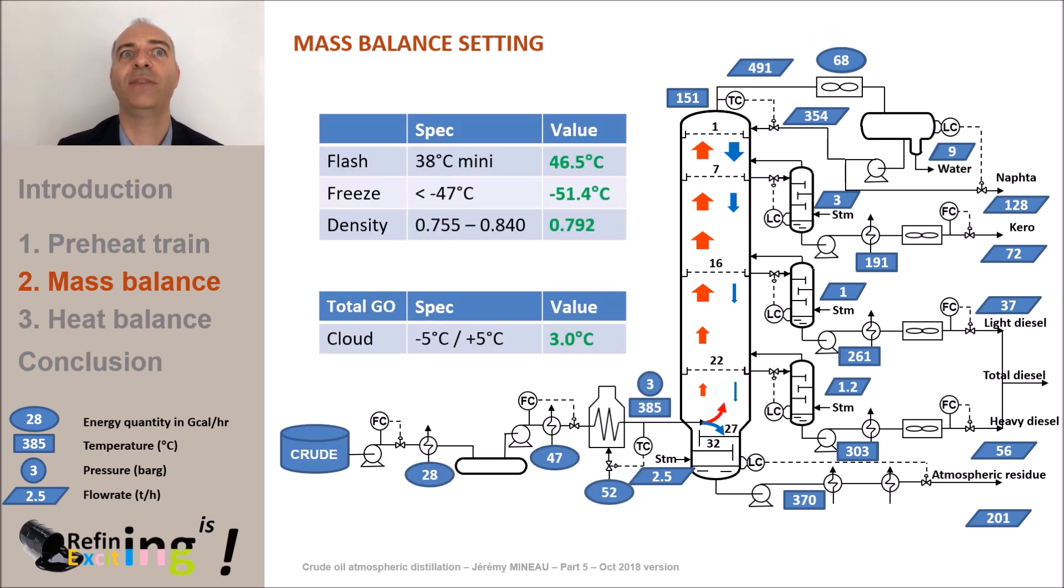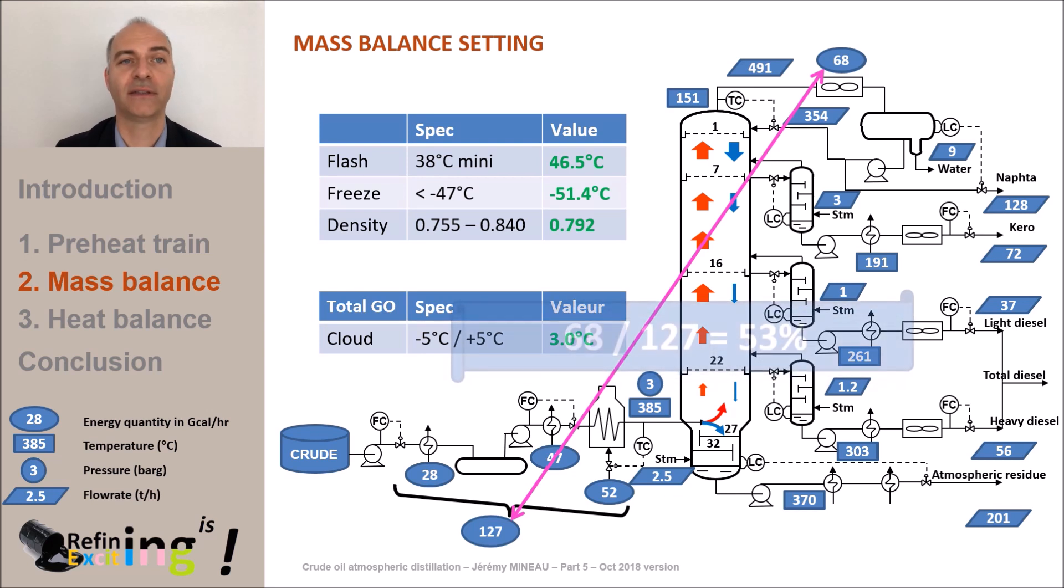As far as energy balance of the column is considered, I remind you that we need 127 gigacalories per hour to heat and partially vaporize the crude. We also see that we lose a very large amount of calories since we condense and cool the head of the column using an air cooler. In fact, this amount of energy is so important that we cannot afford to lose it to the atmosphere. So, we need to find solutions to recover at least part of it. But how?